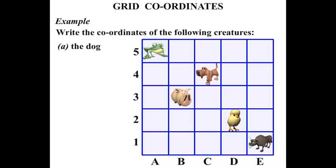Part A, the dog. Okay, let's see where the dog is. There he is. Now we're going to see what it matches up with. You can see that it's in line with the C. It's in the C column and in the row that's 4. So C and 4. We write C4.